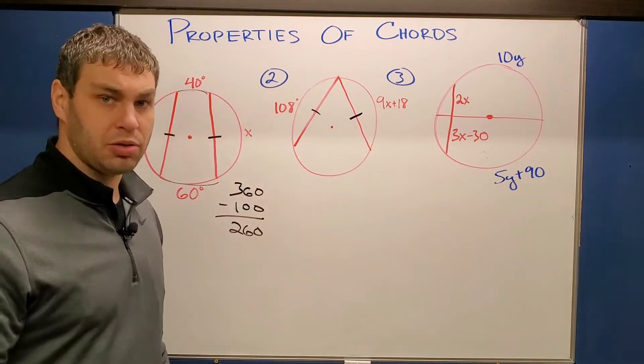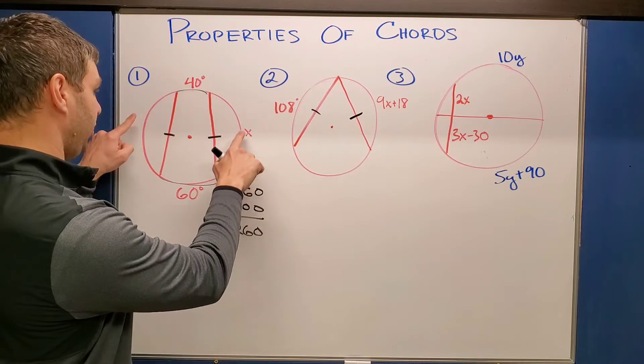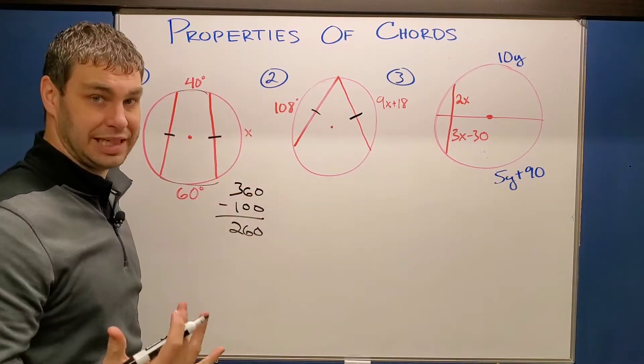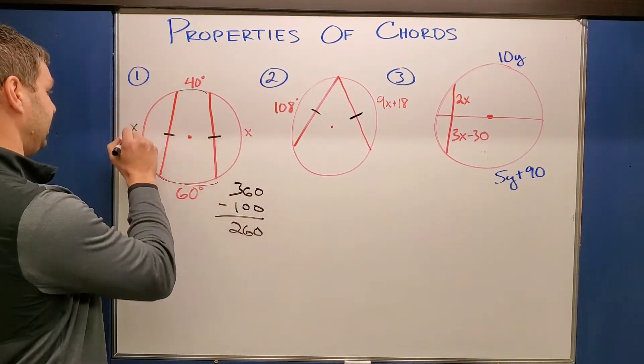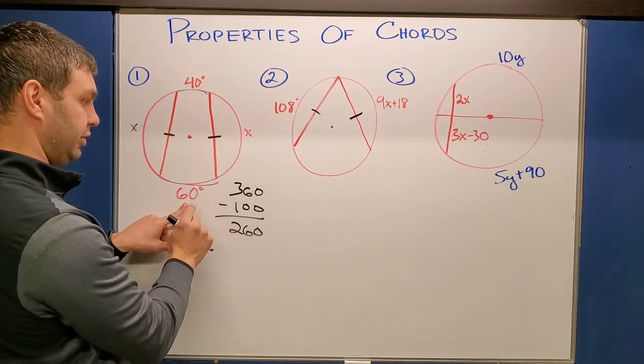Now the property of a chord that we have to remember here is that if this chord is congruent to this chord, then both of their arcs are going to be the same degrees. So I could also say this is X, which if that's true, then since I've already used 60 and 40 or 100 of these degrees, the remaining 260 has to be split evenly between both of these Xs.